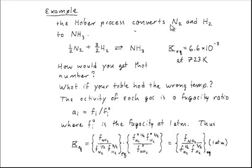The Haber process is our first example — it's historically very important. This is originally how the Germans were making explosives during World War I, but since then it's become very important for feeding the world's people. It's the chemical reaction that combines nitrogen with three parts hydrogen to give ammonia, which is fixed nitrogen we can use for fertilizers. The equilibrium constant for this reaction is 6.6 times 10 to the minus 3. This appears very small, but notice you have two moles on the left and one on the right, so the reaction can actually proceed somewhat to the right at this temperature.